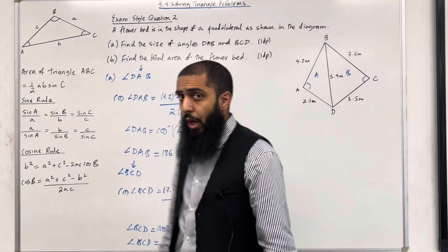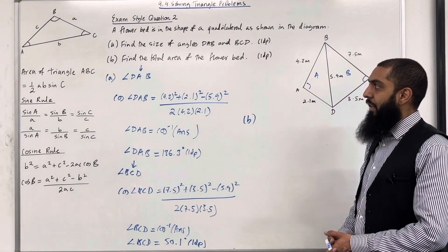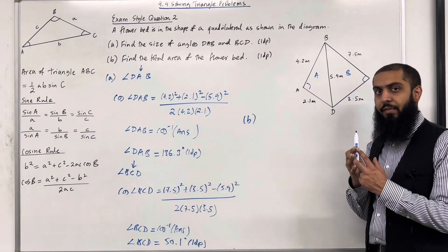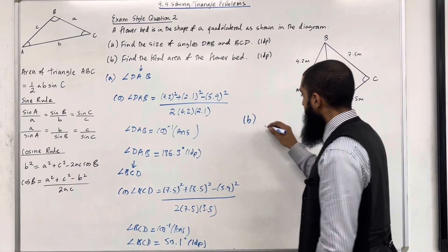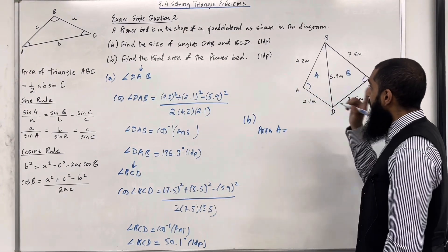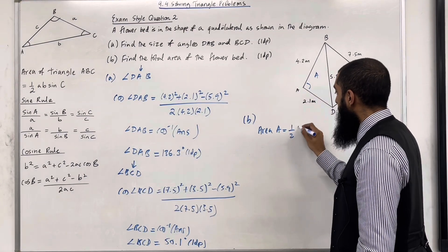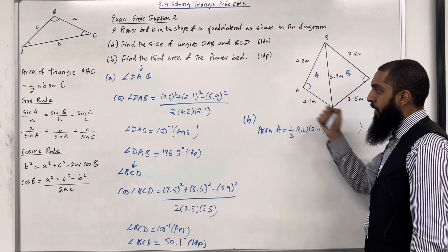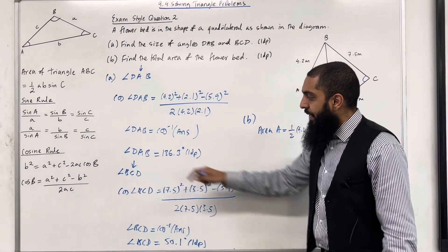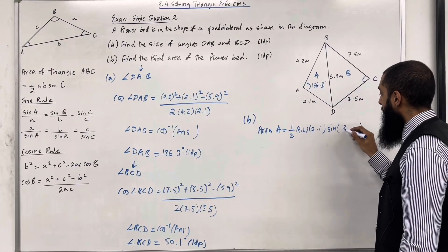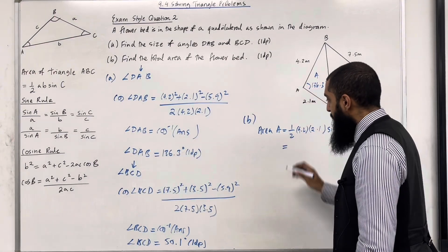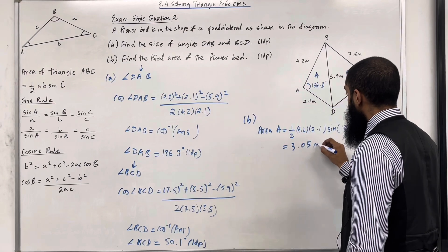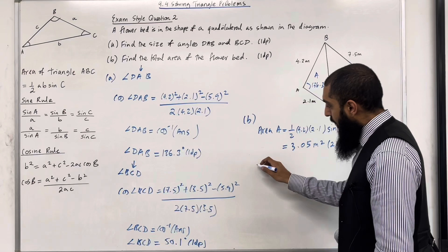Moving on to part B: find the total area of the flower bed. To find the total area, we work out area A, then area B, then add them together. Area A is the area of triangle ABD, given by one half multiplied by 4.2 multiplied by 2.1 multiplied by sine of angle A. Angle A was calculated to be 136.3 degrees, so we have sine of 136.3 degrees. Putting this into the calculator and rounding to two decimal places gives 3.05 metres squared.